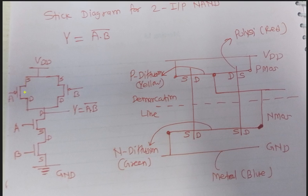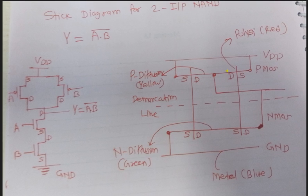Then we draw the source and drain of MOSFET A and MOSFET B. The source terminal of both A and B MOSFETs is connected to VDD. So the source terminal of A is connected to VDD, and the source terminal of B is also connected to VDD — these are the two connections to VDD.